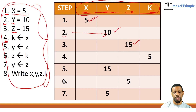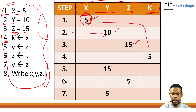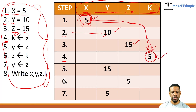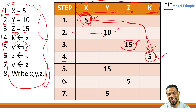Step four says take what is in x and put it inside k — that's what the arrow means. We look at what is in x, which is five, and put that five inside k. So k becomes five. Step five: take what is inside z, which is 15, and put it inside y. So 15 goes and updates y.